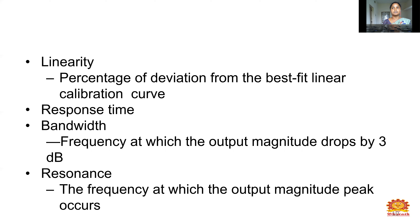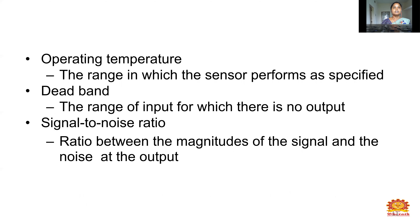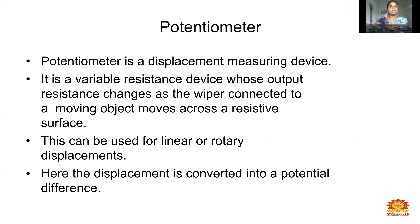Next is response time bandwidth — the frequency at which the output magnitude drops by 3 dB. Response is the frequency at which the output magnitude peak occurs. Operating temperature is the range in which the sensor performance has specified values. Dead band is the range of input for which there is no output. Signal-to-noise ratio (SNR) is the ratio between the magnitudes of the signal and the noise at the output.